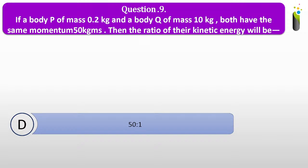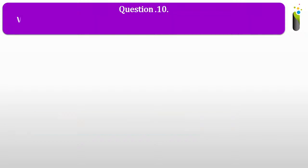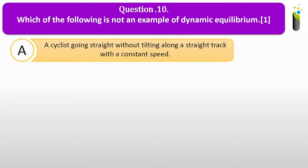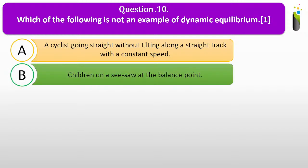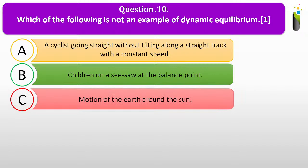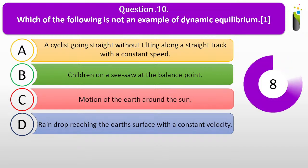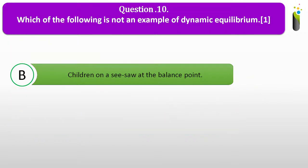Question number ten. Which of the following is not an example of dynamic equilibrium? A, a cyclist going straight without tilting along a straight track with constant speed; B, children on a seesaw at the balance point; C, motion of the earth around the sun; D, a raindrop reaching the earth's surface with constant velocity. The correct answer is B: children on a seesaw at the balance point is not an example of dynamic equilibrium.